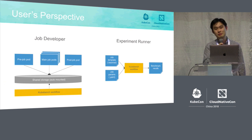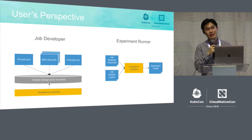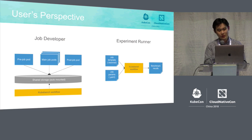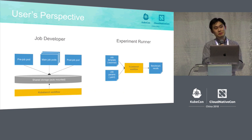Here is how Kubebench looks from a user's perspective. There are two kinds of users. One is the job developer — what you really need to provide is the code that runs in the benchmark job and some extra code to process your results. Kubebench will provide shared storage, and if you run a distributed job, it will automatically mount the volumes to your job pods so that you don't need to worry about copying results and outputs from your pods.